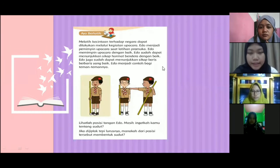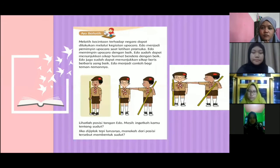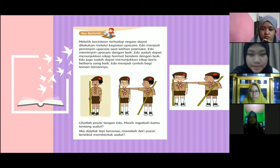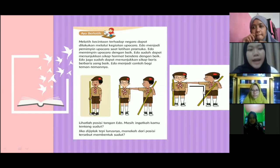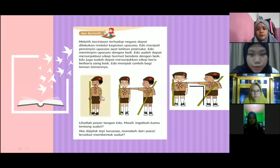Coba dilihat tangan Edo dan teman-temannya di sini. Tangannya membentuk sudut apa? Ada yang tahu? Siku-siku bu. Siku-siku yang mana? Coba, Lili. Yang lancang kanan bu. Iya betul sekali, ini ya. Nah ini merupakan sudut siku-siku. Nah yang selanjutnya ada sudut apa lagi? Sudut lurus bu. Iya betul sekali, yang di sini ya tangannya - lurus. Nah selanjutnya ada sudut apa lagi?